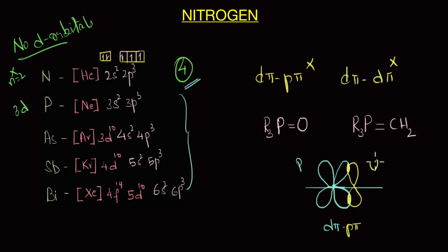Just like that, elements like phosphorus and arsenic can also combine with transition metals by forming d-pi-d-pi bonds to form complexes. Because of the absence of d orbitals, such complexes cannot be formed by our tiny little nitrogen.